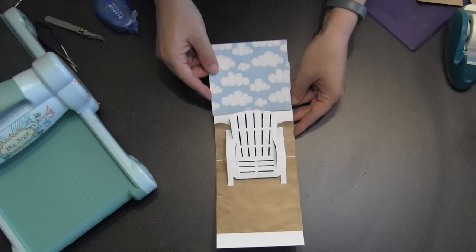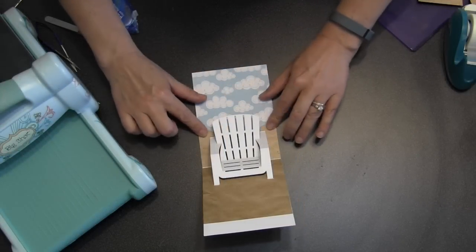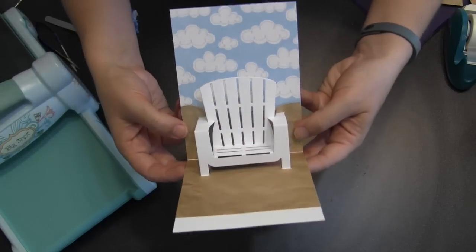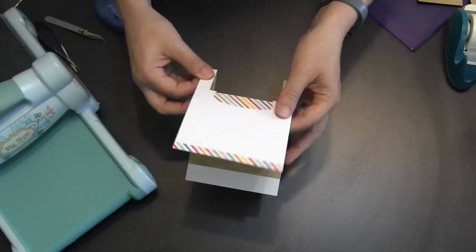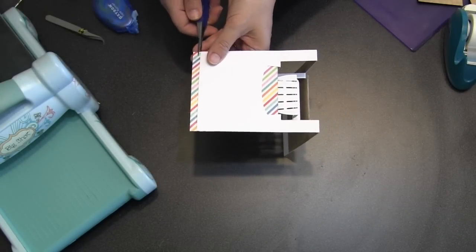I've cut a piece of clouds pattern paper and kind of peeled up the sand a little bit to where I can tuck it down beneath the sand and then just press that back into place. I just cut the clouds paper a little bit tall that way I didn't have to do precise measuring and then afterwards I can just cut off the excess.